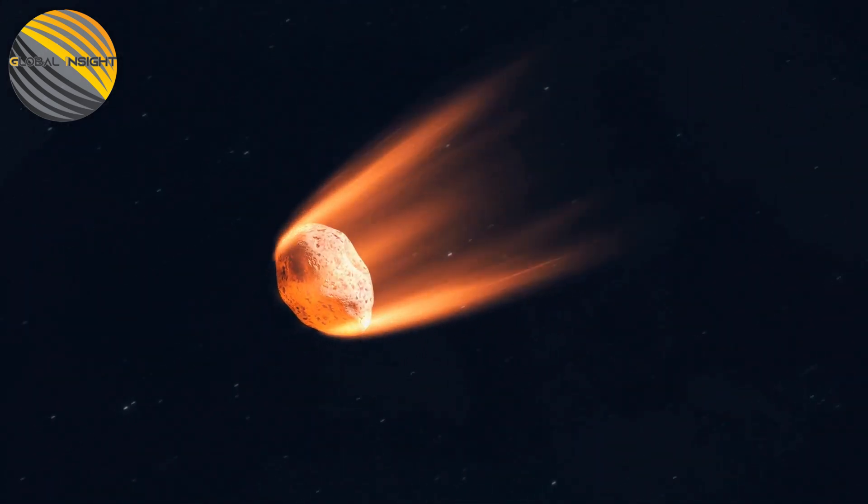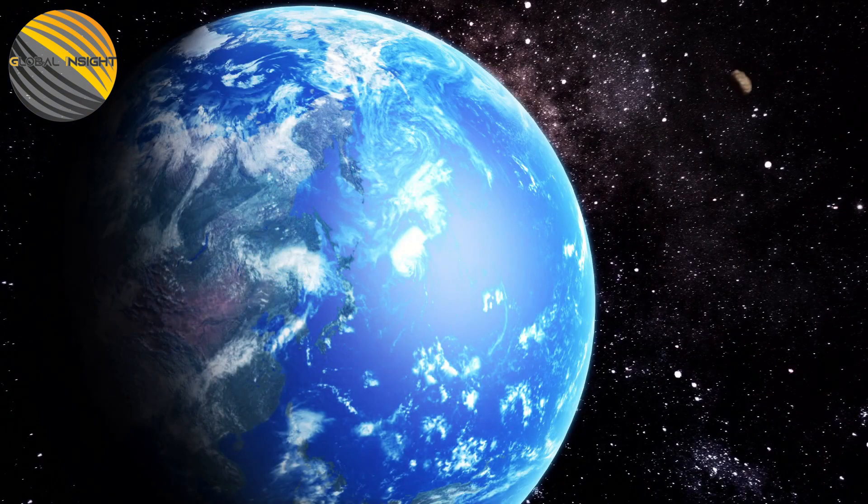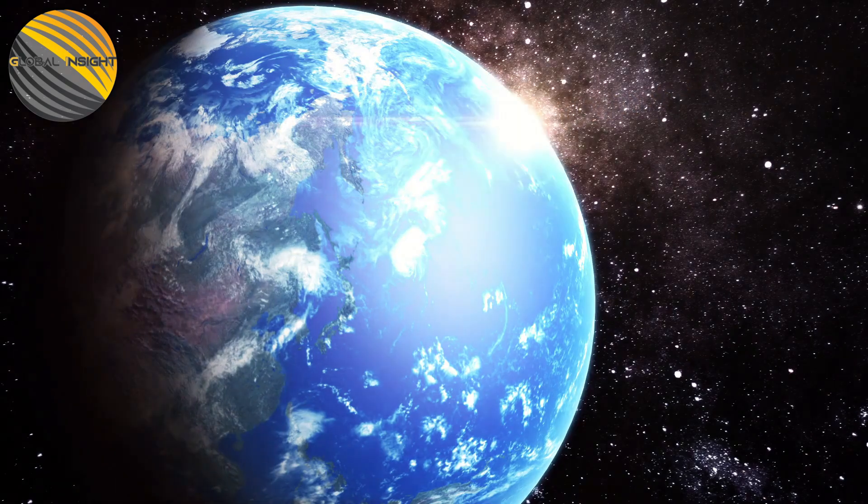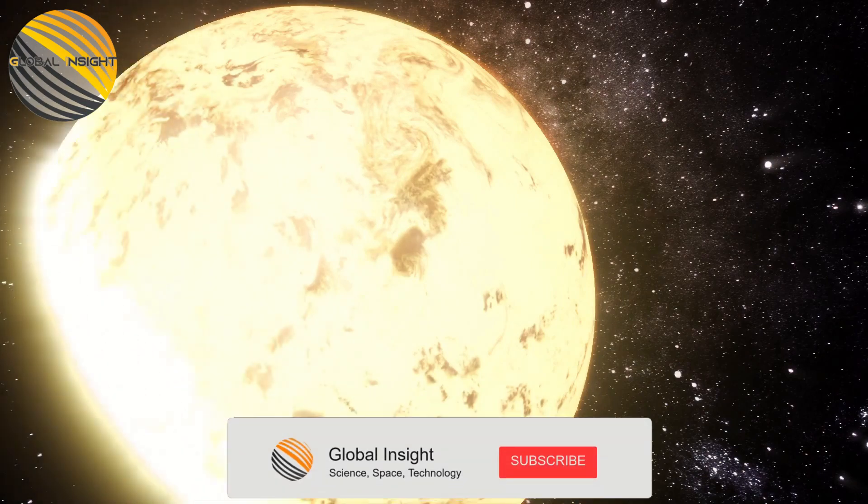A meteor that exploded in the atmosphere above the central Russian city of Chelyabinsk in 2013 produced a blast roughly equivalent to 400 to 500 kilotons of TNT, or 26 to 33 times that of the Hiroshima bomb.